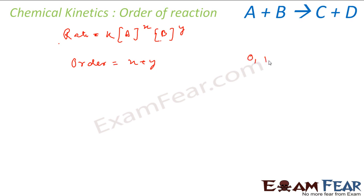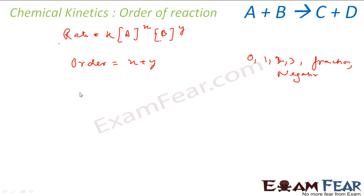Order can be 0, 1, 2, 3, or even a fraction, or can be negative. Please note: order of reaction is an experimental quantity — it cannot be guessed by looking at the balanced reaction equation.